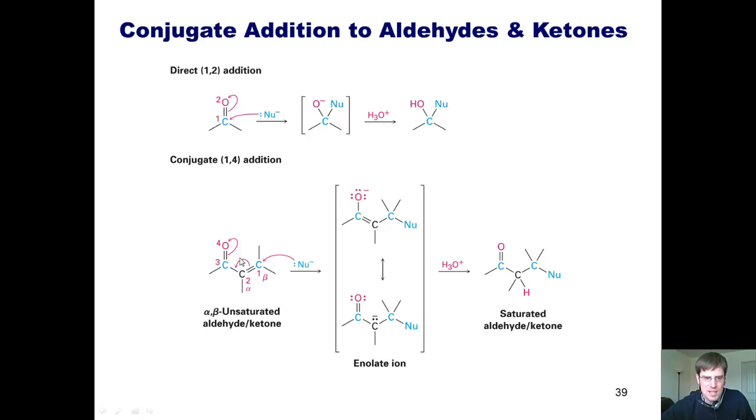If this nucleophile adds into this carbon, it flips these electrons over here like a door on a hinge and pushes these electrons up onto the oxygen. That gives me this type of intermediate. I hope you guys can see that. You're welcome to pause this and look at it a couple of times until this makes sense.